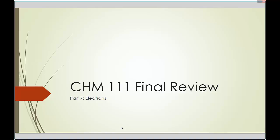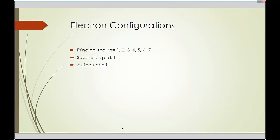This is part 7 of the CHM 111 final review for the exam. We will be focusing on electrons during this review, specifically looking at where the electrons are around the nucleus. To do that, we look at electron configurations.